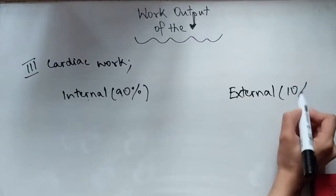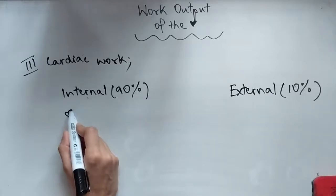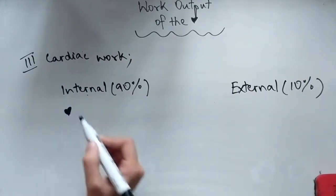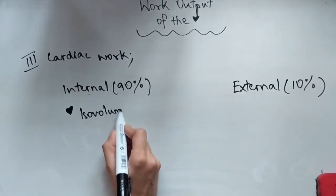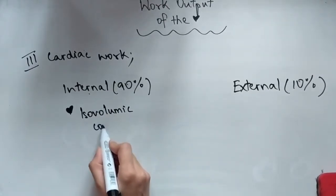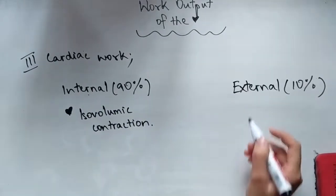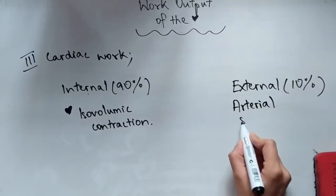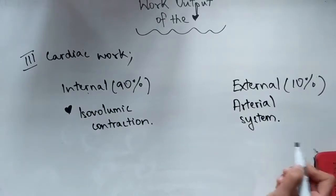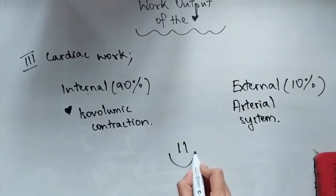The internal work is within the heart—that's how you can remember it—and it involves isovolumic contractions. It's the force necessary to open the aortic and pulmonary valves during systole. The external work, on the other hand, has to do with transferring blood to the arterial system against a resistance, basically the rest of the blood supply outside of the heart. I hope you enjoyed this video. Thank you for watching and see you in the next video.